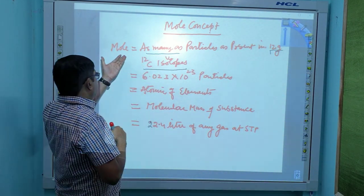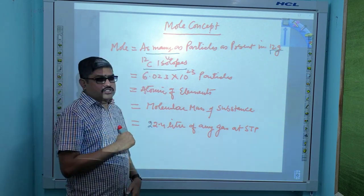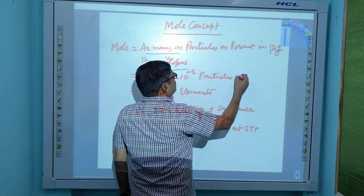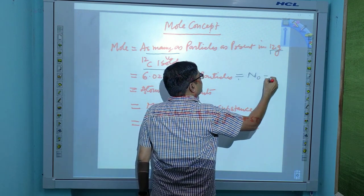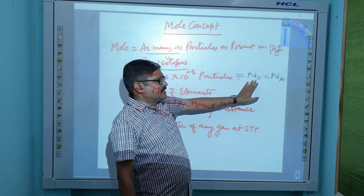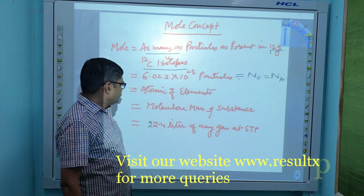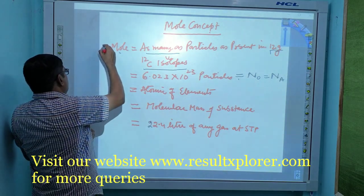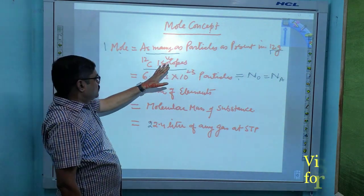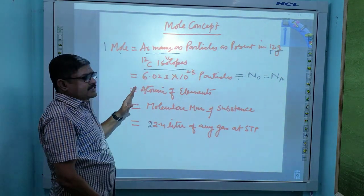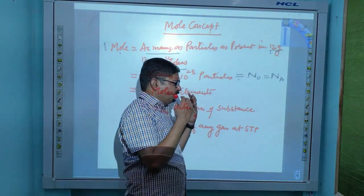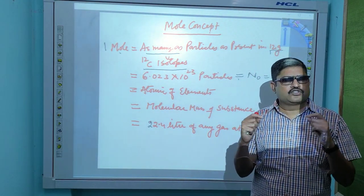Since this mole is related to a number, Avogadro stated that this number is the Avogadro number, equal to 6.023 × 10²³. This Avogadro number is denoted as N₀, or in some books as N. So therefore, one mole is equal to the number of particles present in 12 grams of C-12 isotopes, which is 6.023 × 10²³ particles — meaning atoms, ions, or molecules.